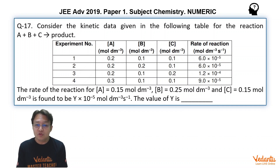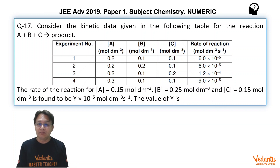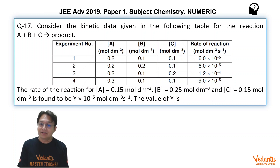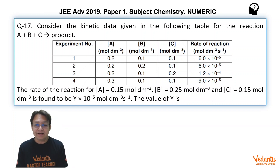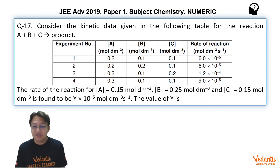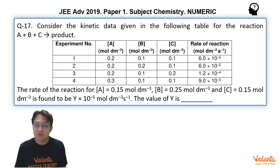In experiment 2, concentration of A is still 0.2, but concentration of B is doubled. We can see that the rate of the reaction given in the table is unchanged — 6 into 10 to the power of minus 5. That clearly gives the idea that upon increasing the concentration of B 2 times, the rate is not changing. That means order with respect to B is 0.